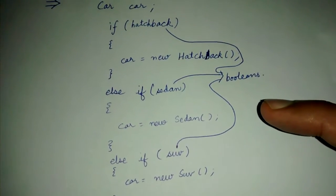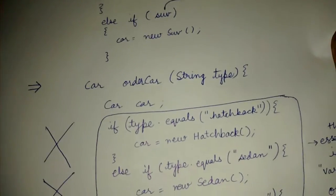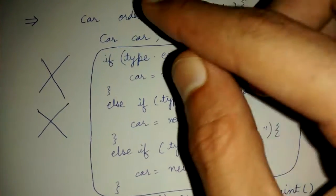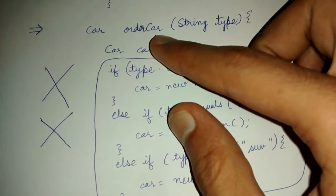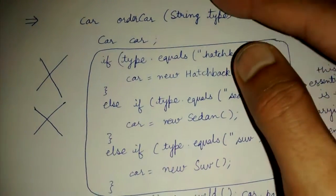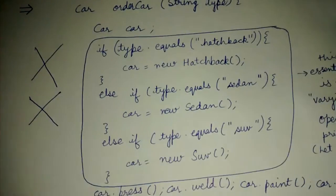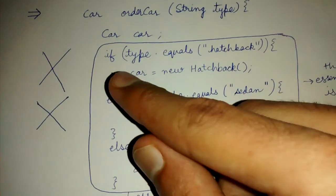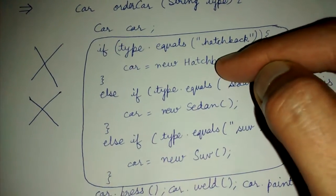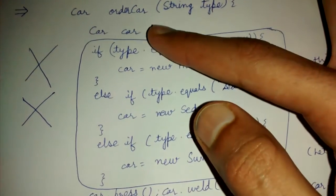Let's consider a simple method in our business class. This is the orderCar method. It basically takes a string type, and instead of booleans we take this string now. If that type equals hatchback, then we create a hatchback. If sedan, we create a sedan. If suv, we create an suv.